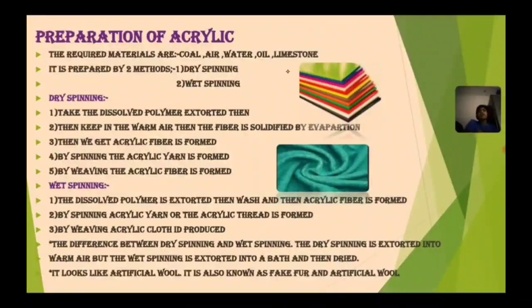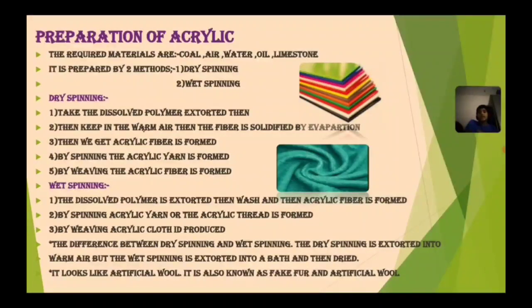Preparation of acrylic: the required materials are coal, air, water, oil, and limestone. It is prepared by two methods — dry spinning and wet spinning. For dry spinning, take the dissolved polymer, then keep it in warm air, and the fiber is solidified by evaporation. Then the acrylic fiber is formed. By spinning, the acrylic yarn is formed, and by weaving, the acrylic fabric is formed.